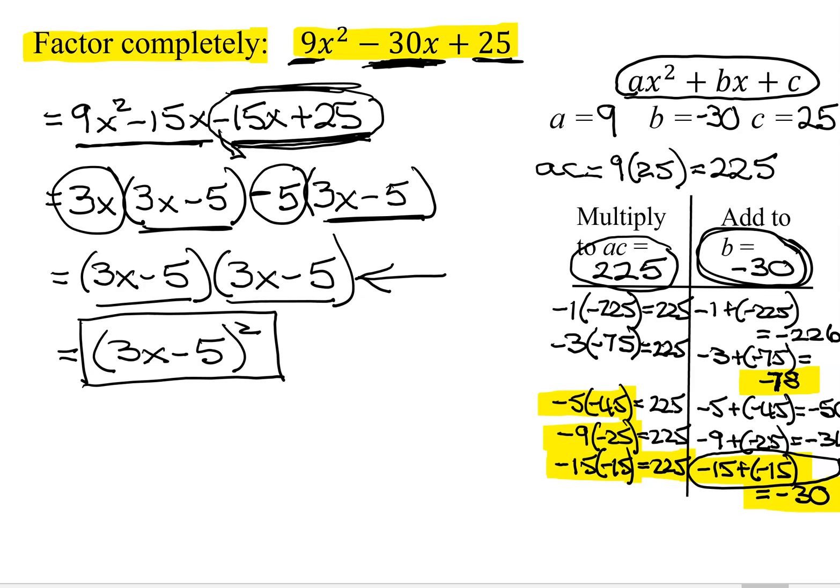I want to point out a shortcut that would have worked in this case. It doesn't work in every case. But if you ever notice, the first term is a perfect square, and the last term is a perfect square. This might be a perfect square trinomial. So you could quickly guess and see if it works. And by that I mean, you take the square root of 9x squared, which is 3x and 3x. The square root of 25 is 5 and 5. Multiply to positive, add to negative, both are negative. So that would be your guess. You would foil it out and see if it gave you the correct middle term here.